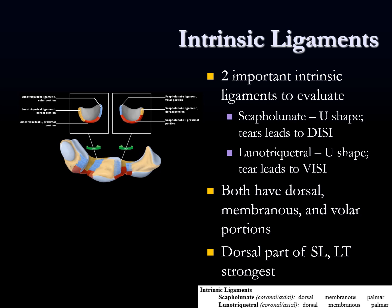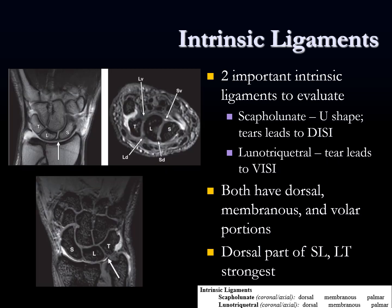They're both U-shaped ligaments having a dorsal, a membranous, and a volar portion. The dorsal components of both ligaments are the strongest — the most important stabilizers of the intrinsic ligaments of the wrist. We evaluate all three components and comment on them. When looking at the intrinsic ligaments, try to visualize each portion on both the coronal and axial images. Here are some MRI images showing those bones in the proximal wrist — scaphoid, lunate, triquetrum on the coronals — with notations of how those ligaments look on the axial images.